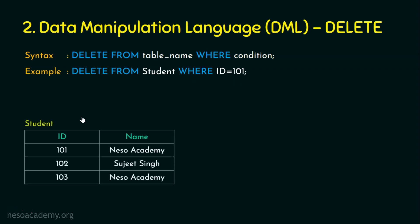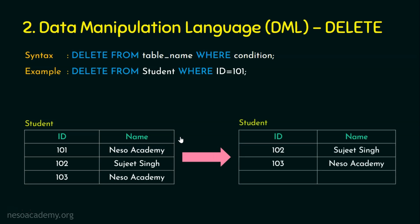Delete from student where id is equal to 101. Suppose we have a table where id and name are the two columns in the student table. The command is: DELETE FROM student WHERE id = 101. Id equal to 101 is matching only one row, so that particular row is going to be deleted. Once this command is executed, the 101 entry will be deleted, as it is the only row matching the condition.